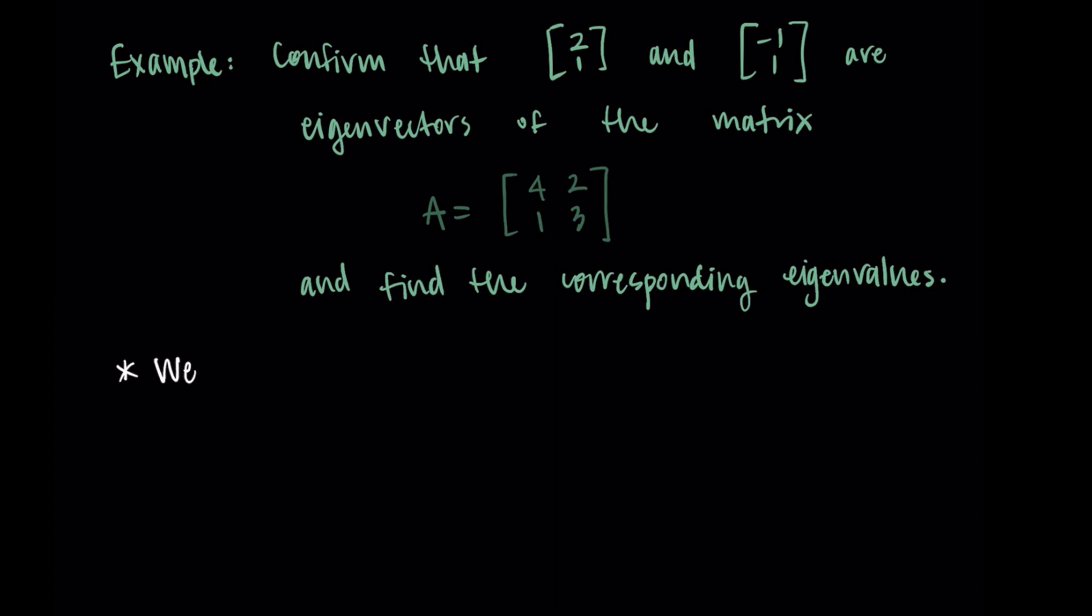Remember, we are looking for the case where we have A times our vector is equal to lambda times our vector. I've now given you the eigenvectors and the matrix A, so we are just going to try to confirm that it has this property and then find the lambda that it works for. I'm going to compute A times v for each of these vectors and see what happens. We do our matrix A, and then we're going to multiply it by [2, 1] or [-1, 1]. Let's do [2, 1] first.